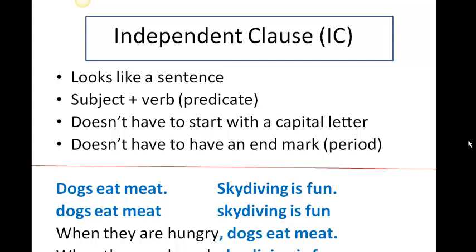Let's take a look at the examples. Dogs eat meat. I can write the sentence with a capital D and a period. I can also write it with a lowercase d and without a period. Both are considered independent clauses, but only the one with the capital and the period can be considered a sentence.